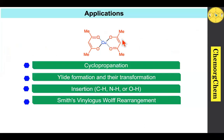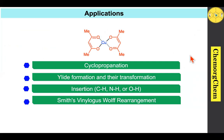The applications of copper acetylacetonate are wide. However, here we are going to see only four important applications, which are mainly based on copper carbene-based reactions such as cyclopropanation, ylide formation and related transformations, insertion reactions, and finally the Smith-Doering-Wolf rearrangement. Apart from copper carbene-based reactions, some other reactions are also known in textbooks as well as the literature, such as Lewis acid-catalyzed reactions — meaning copper acetylacetonate can act as a Lewis acid — as well as coupling reactions.